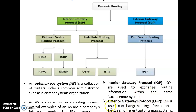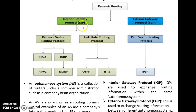EGP is used to exchange routing information between different Autonomous Systems. Dynamic routing has two categories: IGP, which is routing data within an Autonomous System, and EGP, which is routing data between different Autonomous Systems. Our topic, OSPF, falls under Interior Gateway Protocol, meaning it handles routing within an Autonomous System. OSPF is also a category under Link State Routing Protocol.